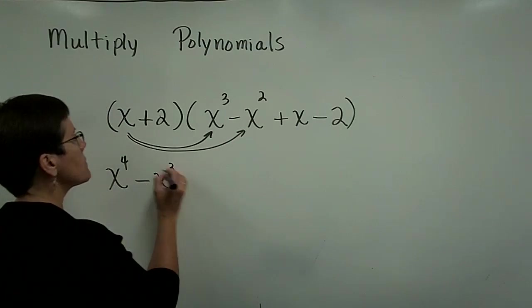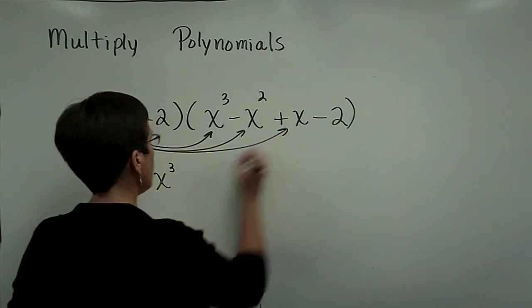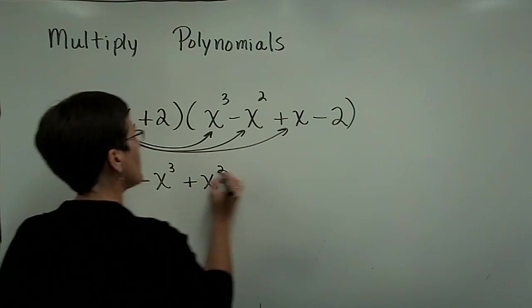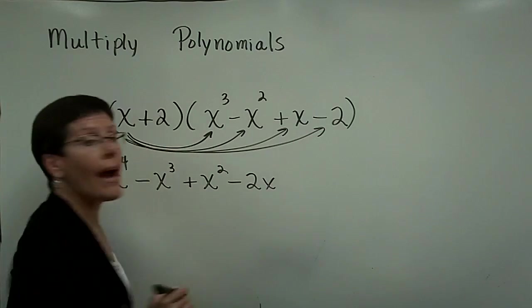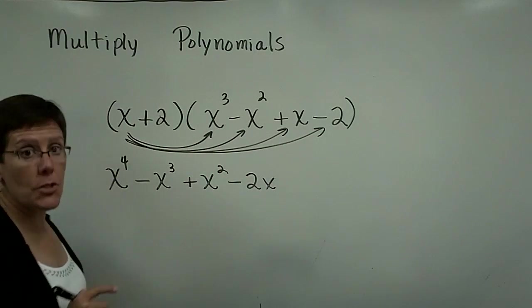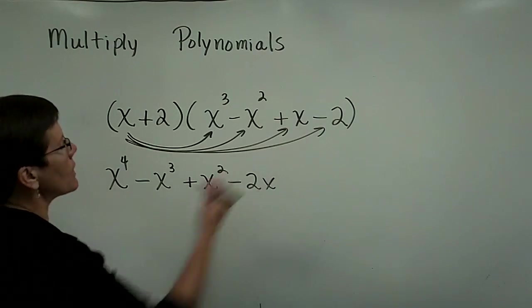There's a minus sign there. x times x is x squared, and x times a minus 2 is a minus 2x. So I've distributed the first term in the binomial through everything in this polynomial.